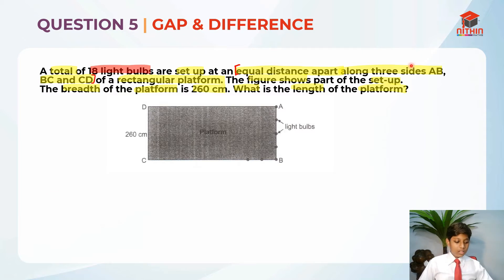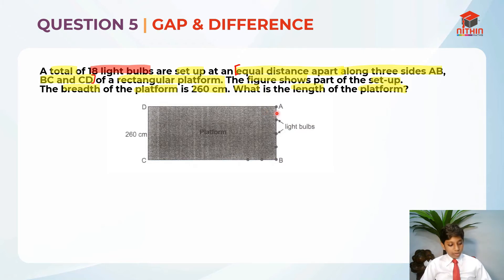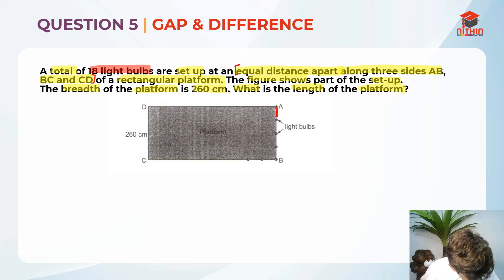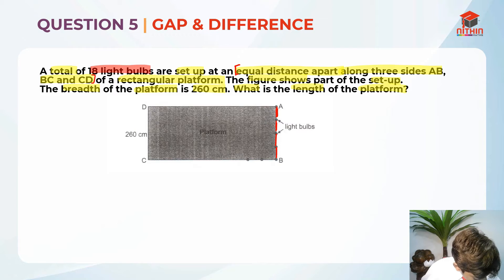I hope you understand the question and what they are asking for — they are asking for the length. There is a total of 18 light bulbs, and they are set up at an equal distance apart. So every gap between bulbs is equal to every other gap throughout the three sides.